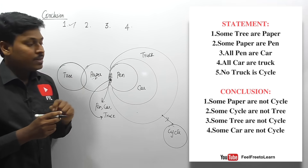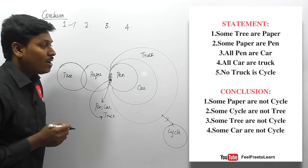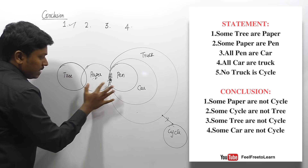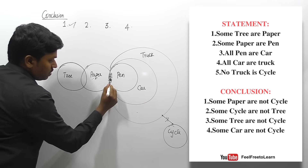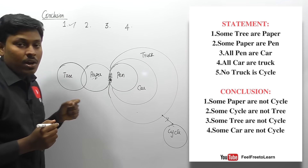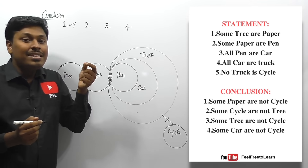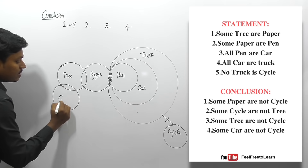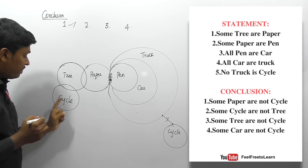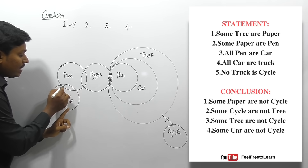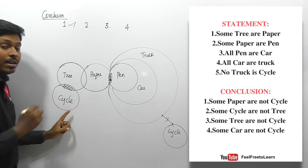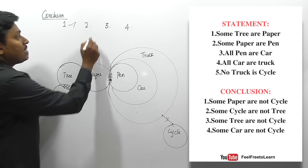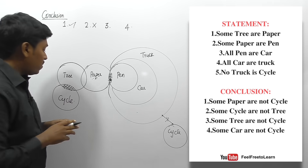Conclusion two: 'some cycles are not tree.' Read the first two words: 'some cycle.' Cycle does not have a 'some' region defined, so we can draw cycle separately. If we draw cycle there, that region would be some cycle and tree — but the conclusion says some cycle are not tree. Since some cycle can be tree, conclusion two is false.